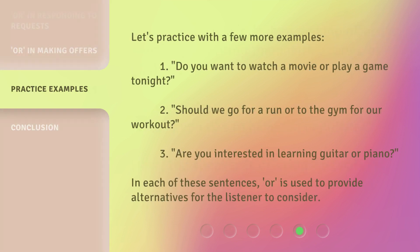Let's practice with a few more examples. One: 'Do you want to watch a movie or play a game tonight?' Two: 'Should we go for a run or to the gym for our workout?' Three: 'Are you interested in learning guitar or piano?' In each of these sentences, 'or' is used to provide alternatives for the listener to consider.